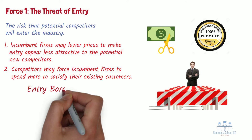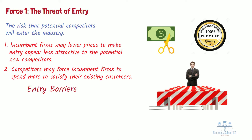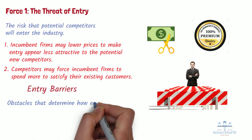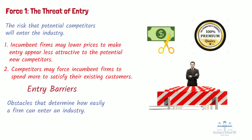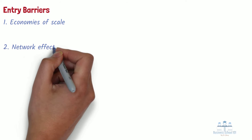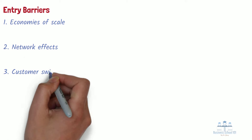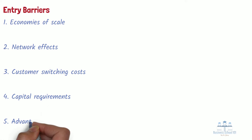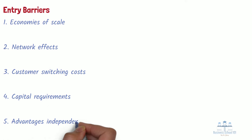Entry barriers, which are advantageous for incumbent firms, are obstacles that determine how easily a firm can enter an industry. Incumbent firms can benefit from several important sources of entry barriers. Those barriers are economies of scale, network effects, customer switching costs, capital requirements, and advantages independent of size.